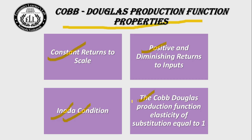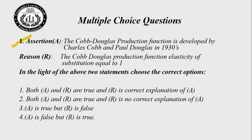Question 1 (Assertion-Reason): Assertion A — the Cobb-Douglas production function was developed by Charles Cobb and Paul Douglas in the 1930s. Reason R — the Cobb-Douglas production function's elasticity of substitution equals 1. Both statements are true, but R is not the correct explanation of A. The answer is choice 2: both A and R are true, but R is not the correct explanation of A.